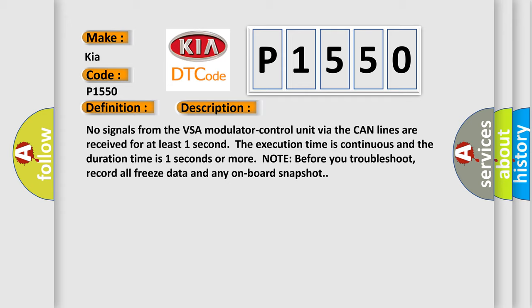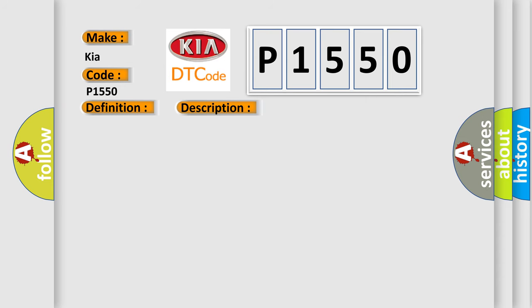This diagnostic error occurs most often in these cases: Poor connections or loose terminals at the gauge control module, the VSA modulator control unit, and the PCM. Open circuit between the PCM and the VSA modulator control. Perform DLC circuit troubleshooting. Faulty VSA modulator control unit.